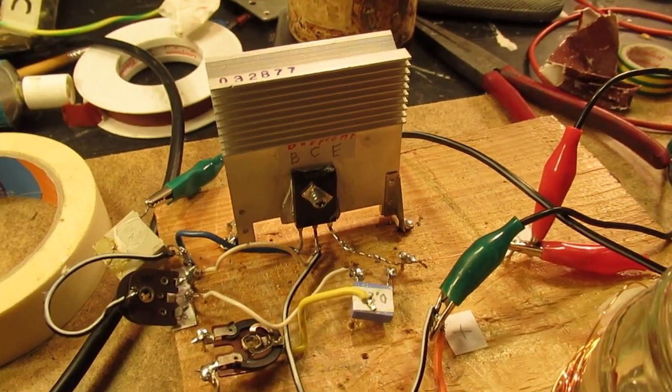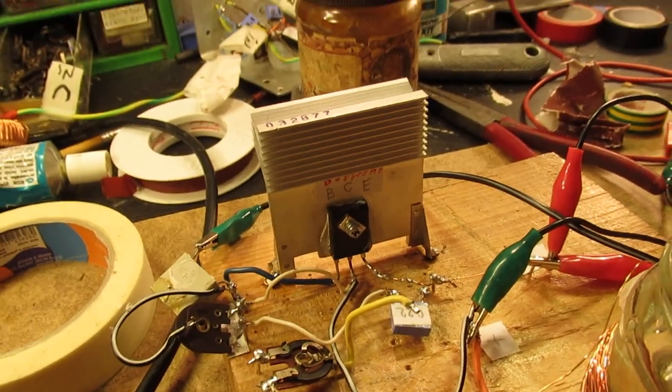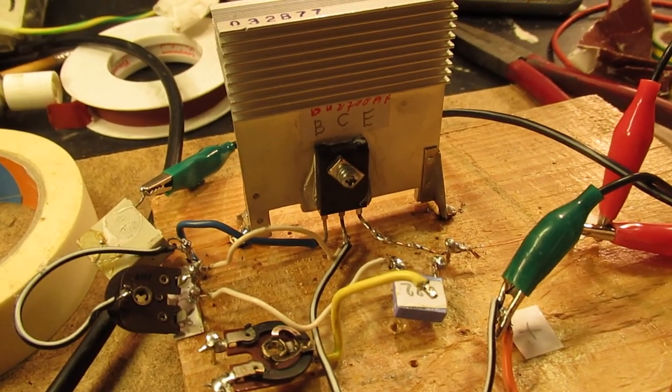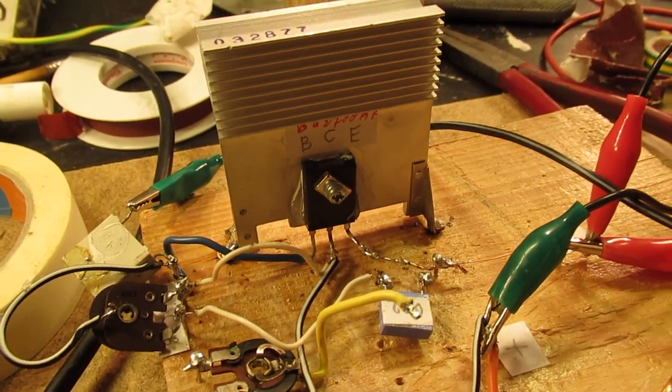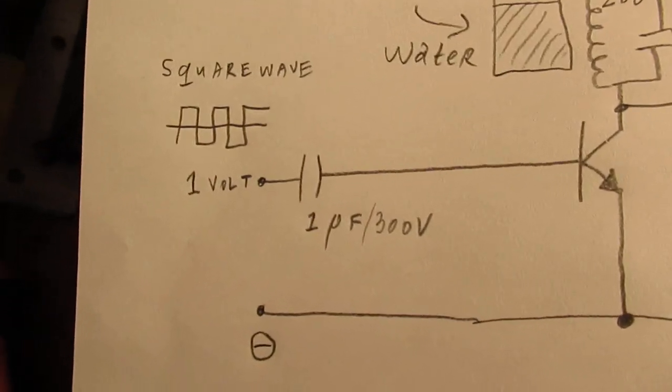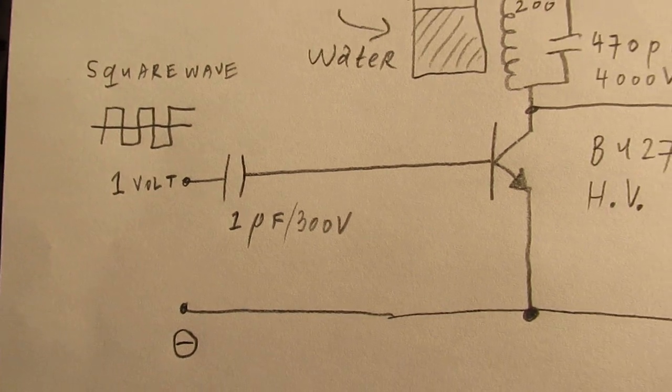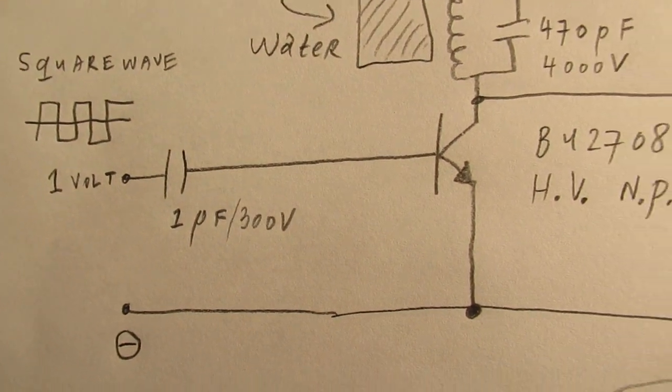And it was very peculiar. I found that the best results were given with only one high voltage transistor that was driven by a one-volt square wave. The Darlington did not function better. It even functioned worse.